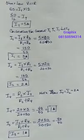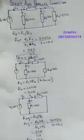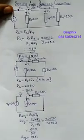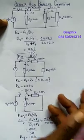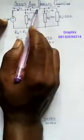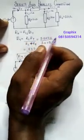So we have successfully calculated all currents. To summarize: I4 = 1 ampere, I3 = 1 ampere, I1 = 3 amperes, I2 = 2 amperes, and IT = 5 amperes. If you want to calculate the voltage drop across each resistor, it is straightforward from here.